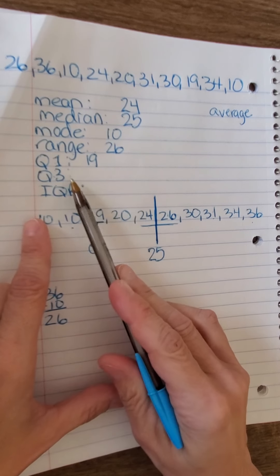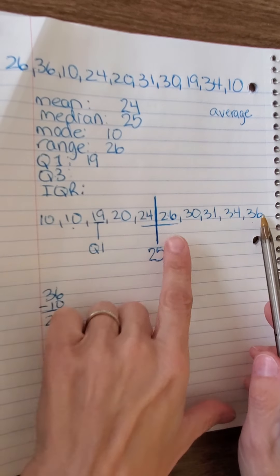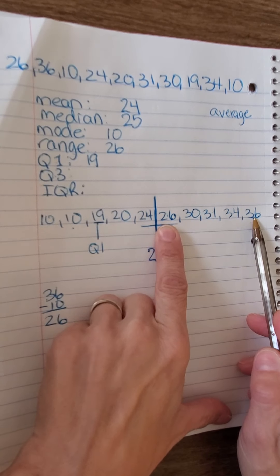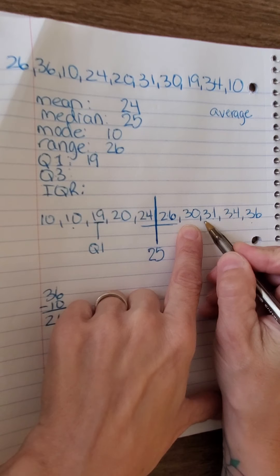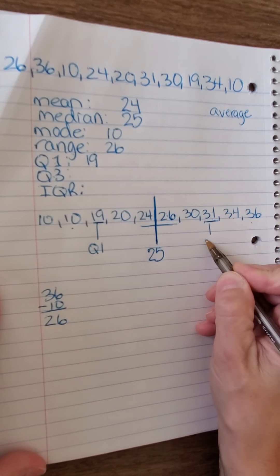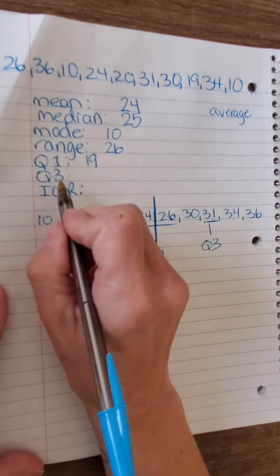Now, we're going to do the same thing and find the median on this half. One off the high, one off the low, one off the high end, one off the low end, and 31 is in the middle. So, that is quartile 3.